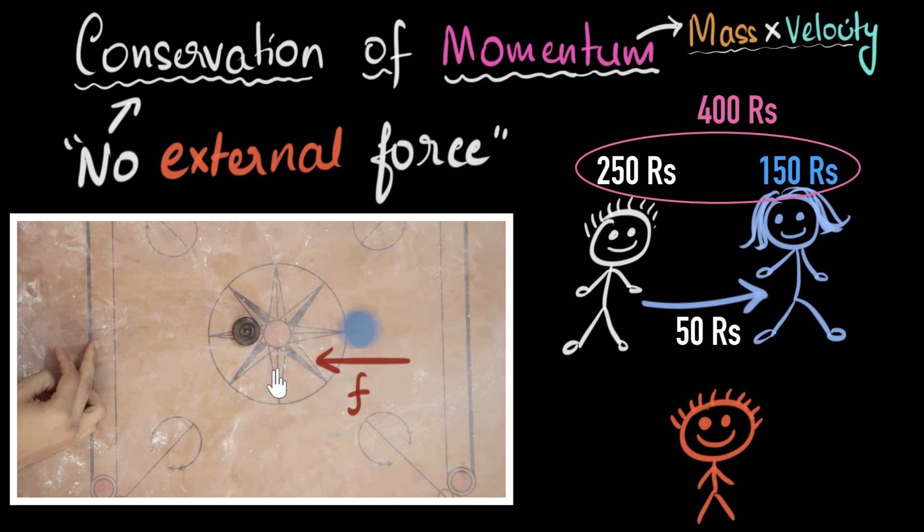As long as there isn't a fourth body which starts putting an external force. Like for example, the floor might start putting friction on the carom board. Makes sense, right?